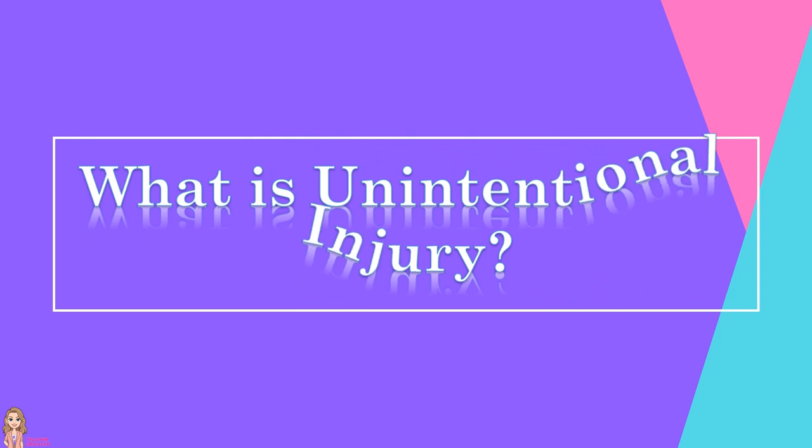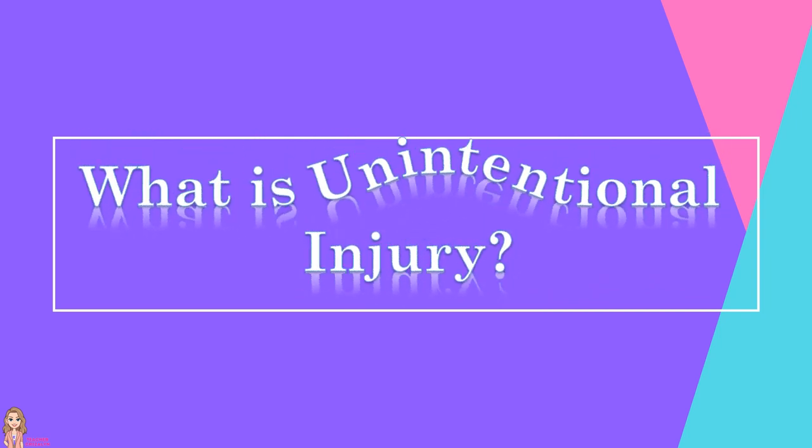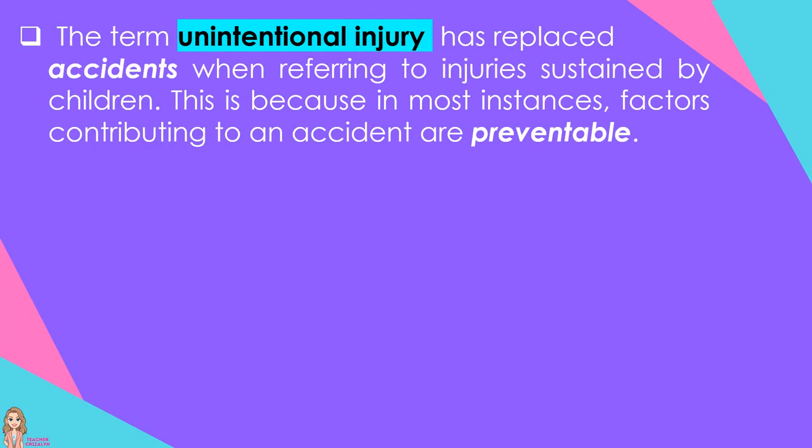What is unintentional injury? The term unintentional injury has replaced 'accidents' when referring to injuries sustained by children. This is because in most instances, factors contributing to an accident are preventable. Childhood injuries are most often attributed to environmental hazards, lack of appropriate planning, and adult supervision.